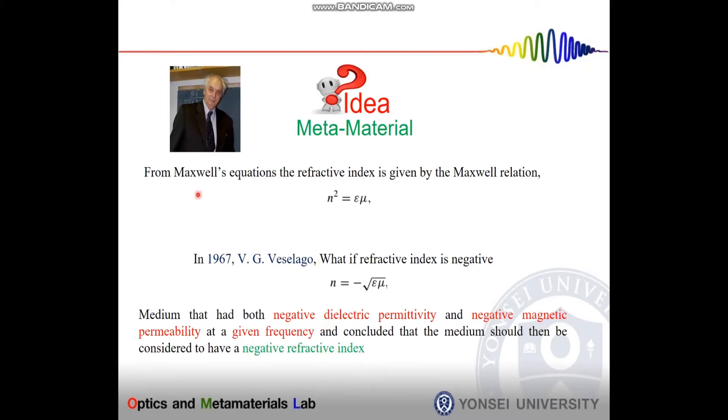According to Maxwell's equation, we can define the refractive index of any material with the relationship of electric permittivity and magnetic permeability. Sir V.G. Veselago in 1967 coined an idea: what if the refractive index of a material has real negative value. It is only possible when the dielectric permittivity and magnetic permeability both have real negative value.